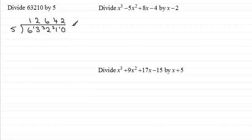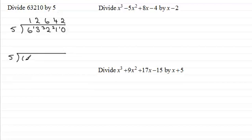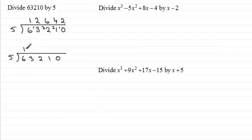Now not too difficult, but I want to show you how we can set this out by a different method. Same answer obviously, but the method we're going to use is long division. So we'll do exactly the same sum — 5 into 63,210. Running through this again, we say what do I multiply 5 by to get as close as I can to 6? Well it's 1. This time we do 1 times 5 which is 5, and put it underneath here.